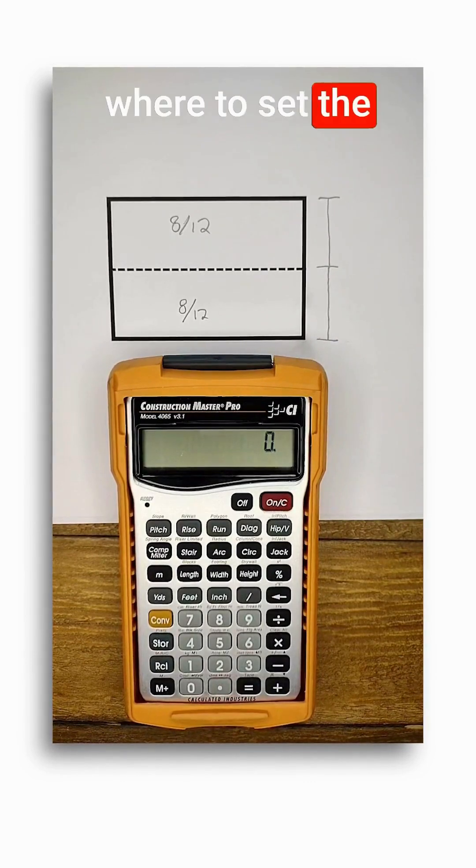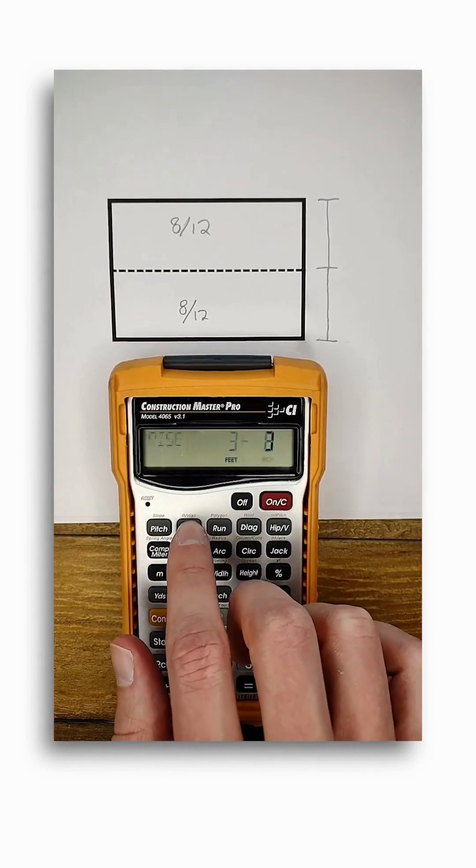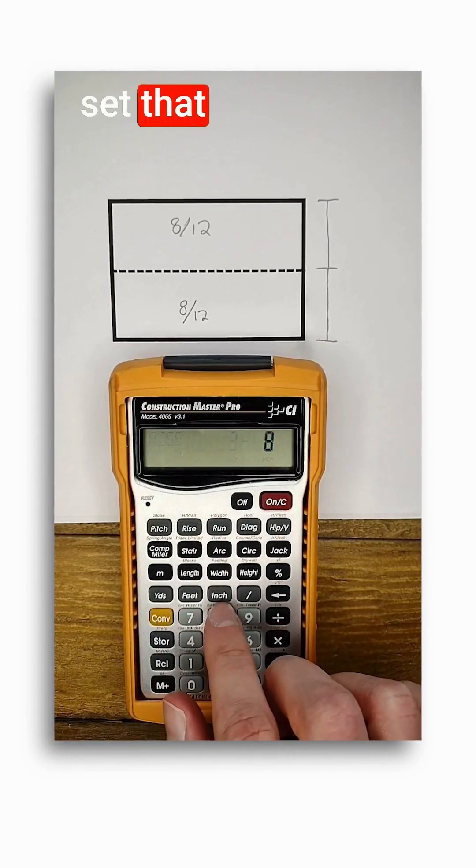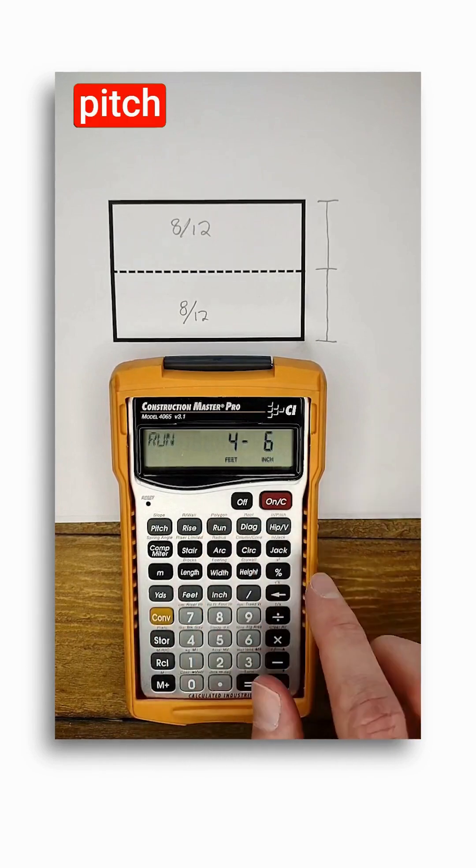So to figure out where to set the center of the ridge, first I'm going to enter the difference in wall height. So three feet and set that as my rise. Then enter the pitch, 8 inch pitch, and push run.